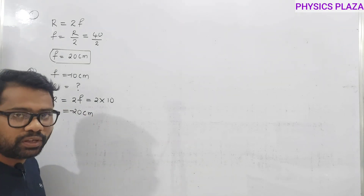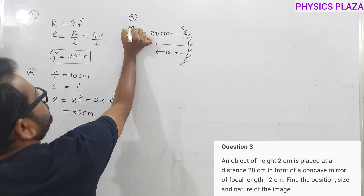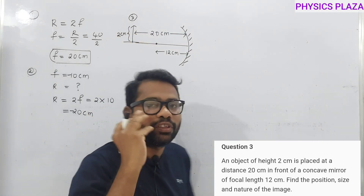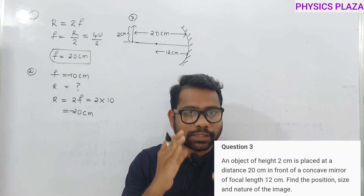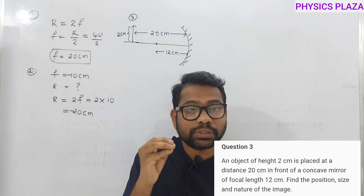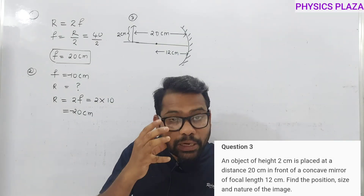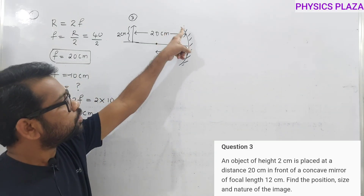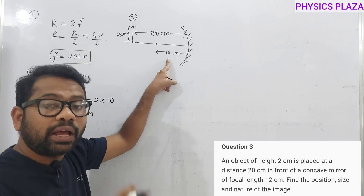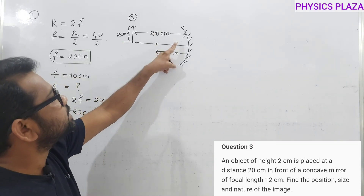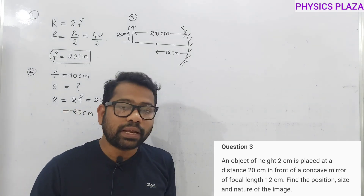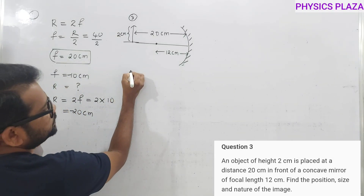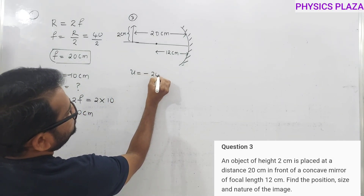Third numerical: object height is 2 cm. Let us make a diagram — a diagram doesn't carry marks but gives a clear idea of what is given and what is to be calculated. A concave mirror of focal length 12 cm, object height 2 cm placed at 20 cm. As per sign convention: object distance u = −20 cm, focal length f = −12 cm, object height h₀ = 2 cm.